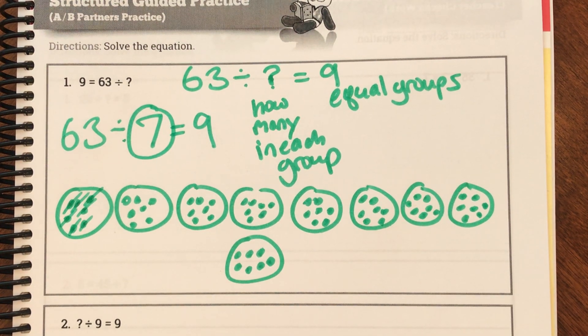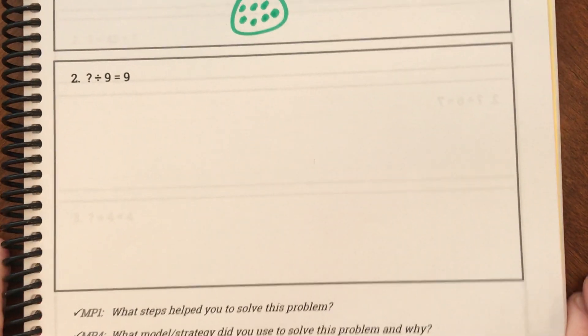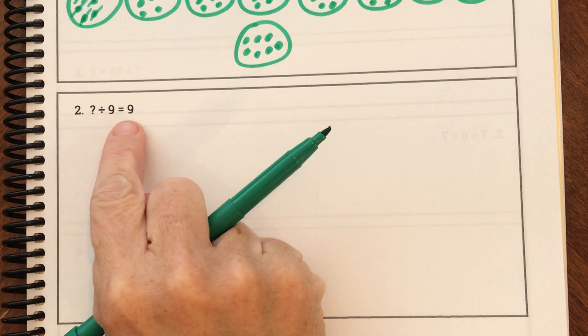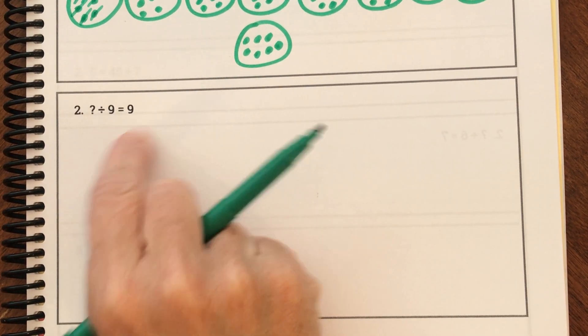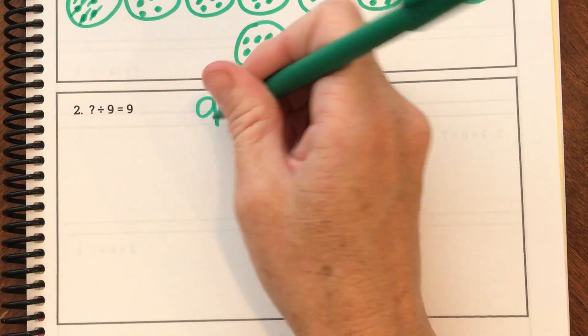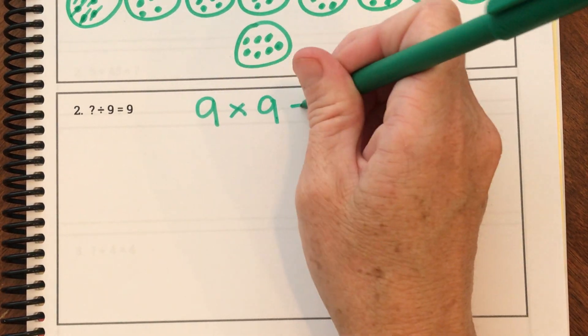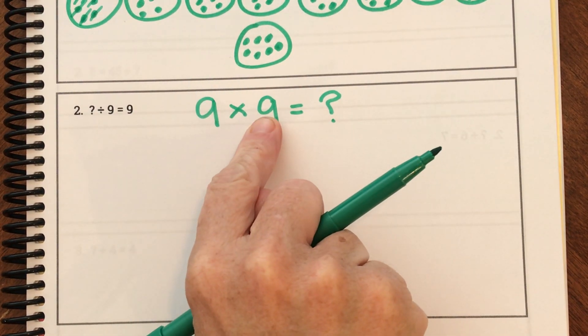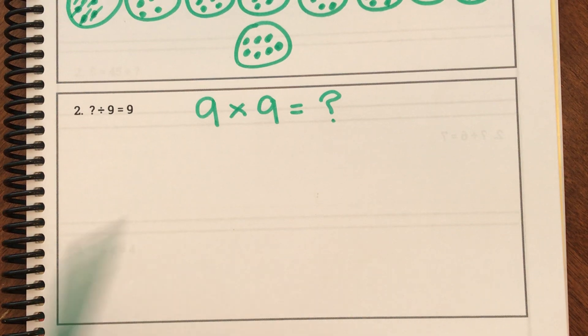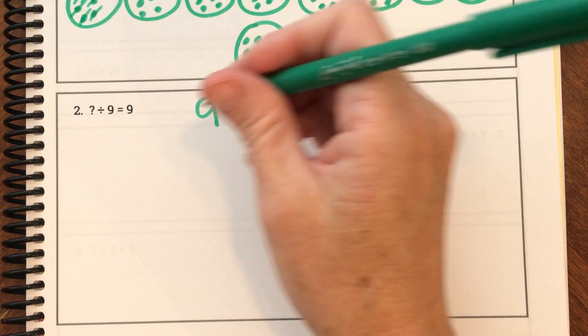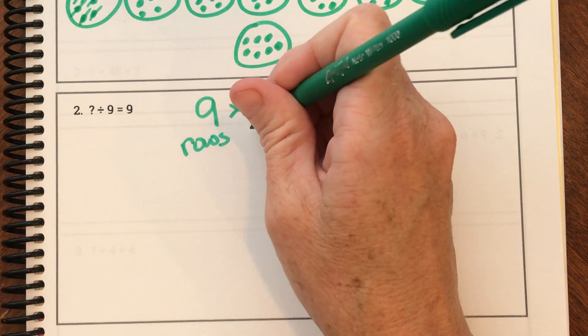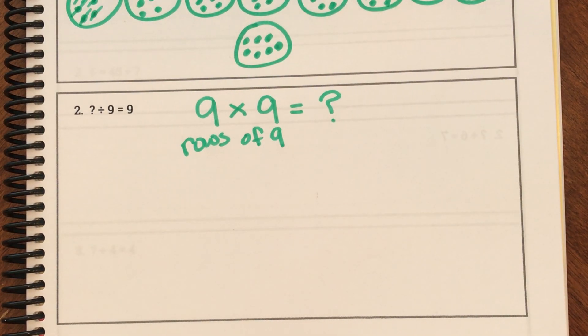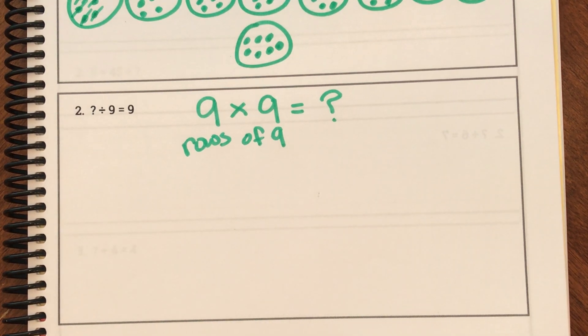Let's look at this next one. I might do this next one a little different. We haven't used our inverse operation. If we have question mark divided by nine equals nine, can I use my inverse operation and say nine times nine must equal question mark? That's the inverse operation. Well, nine times nine means I have nine rows of nine.